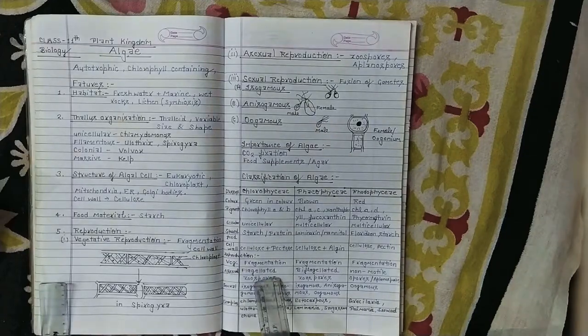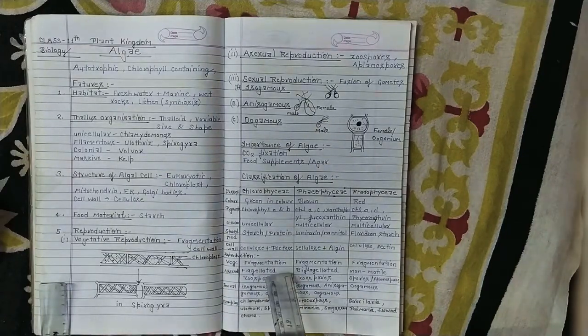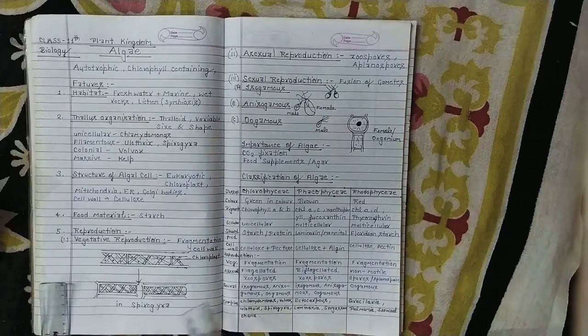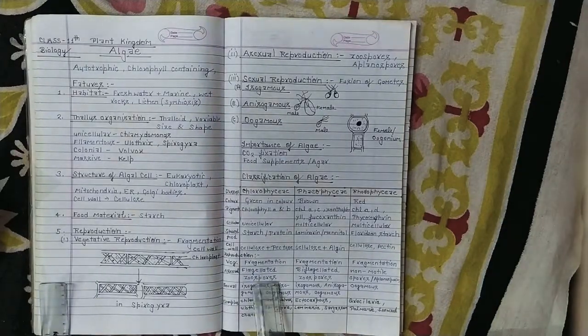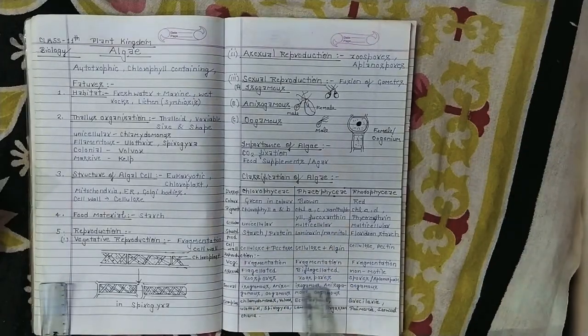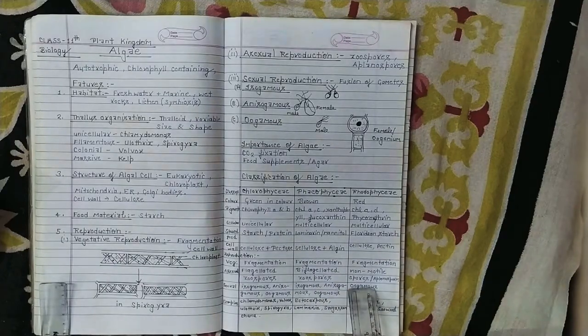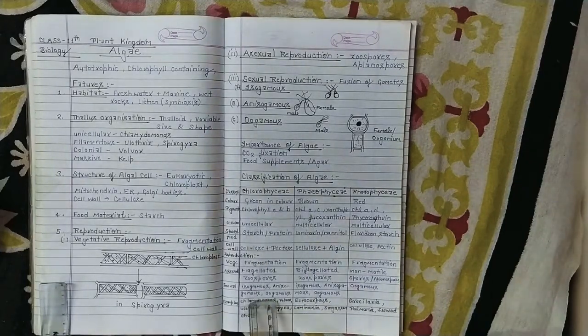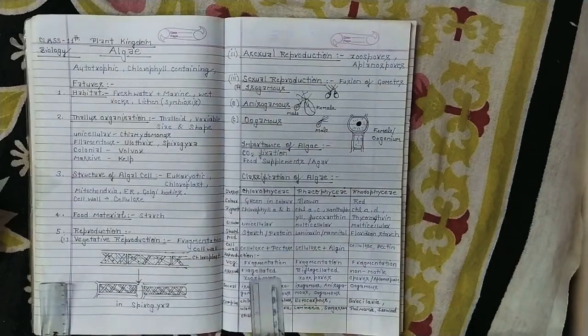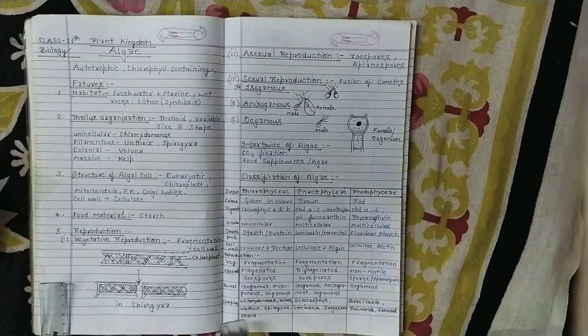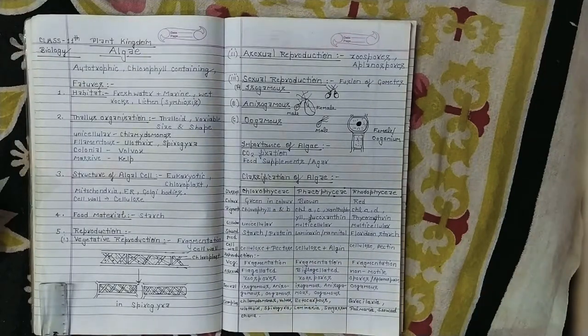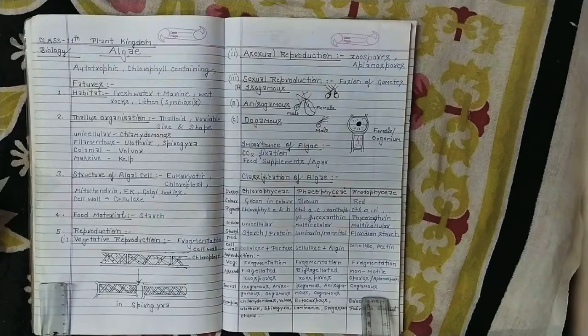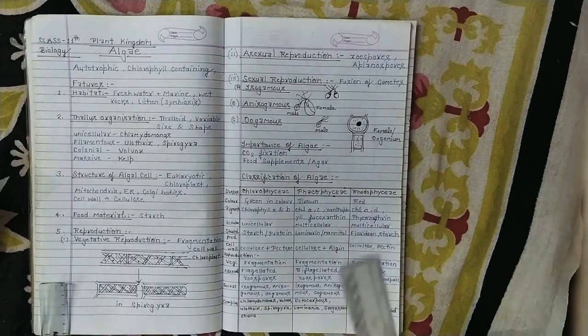Vegetative reproduction is the same method, fragmentation in Chlorophyceae, fragmentation in Phaeophyceae, and fragmentation also in Rhodophyceae. Asexual reproduction in Chlorophyceae is by flagellated zoospores, in Phaeophyceae by biflagellated zoospores, and in Rhodophyceae by non-motile spores, that is the difference. Non-motile spores means aplanospores. Sexual reproduction: Chlorophyceae has three types - isogamous, anisogamous, and oogamous. Phaeophyceae has isogamous, anisogamous, and oogamous, the same as Chlorophyceae. But the difference is Rhodophyceae, which has only oogamous type.